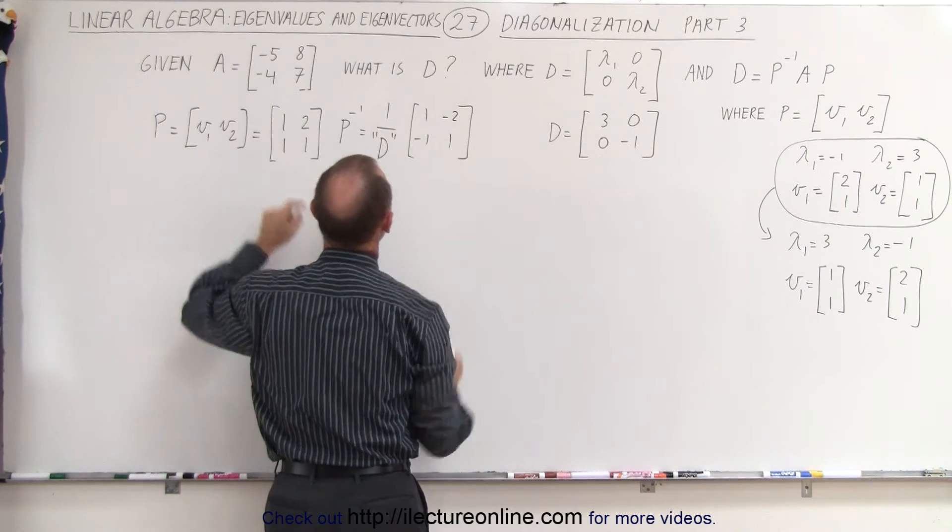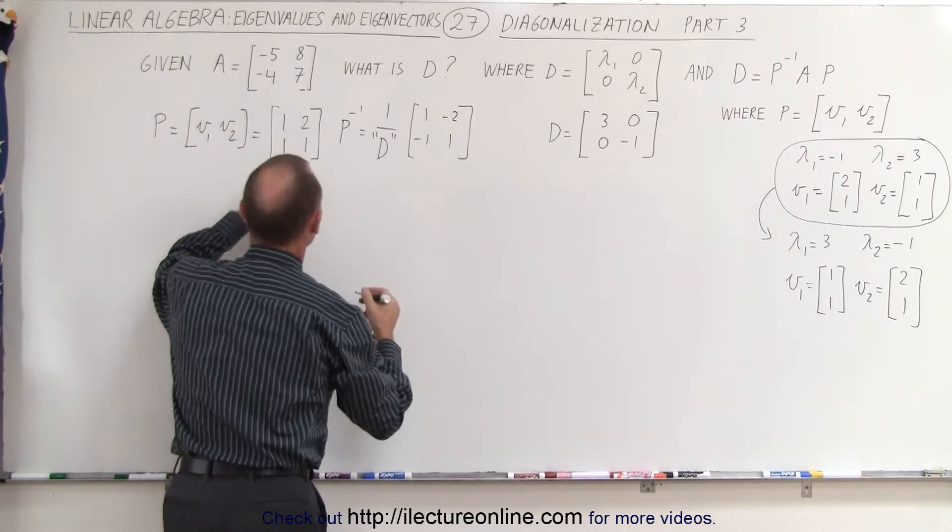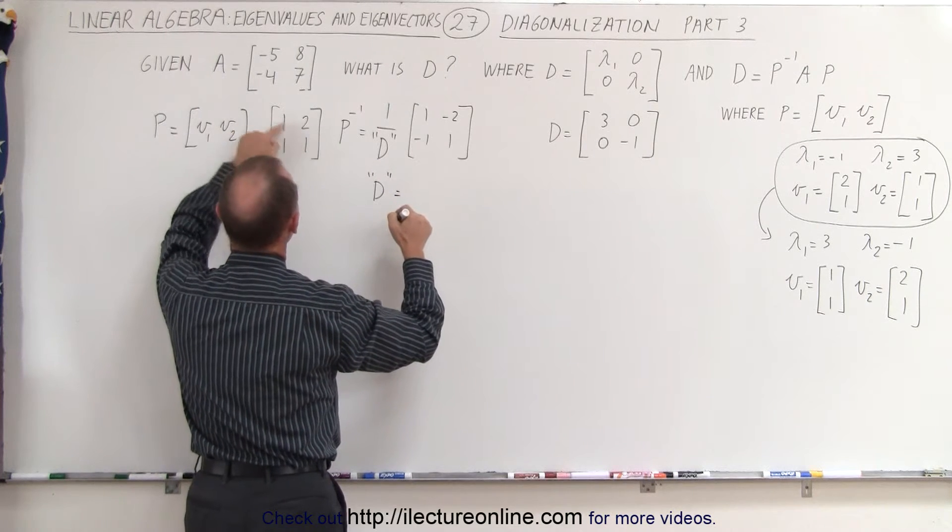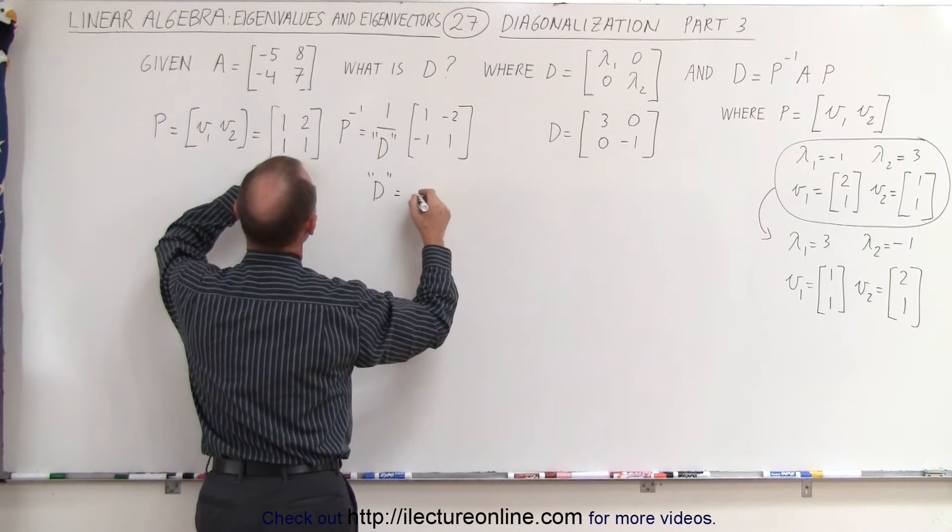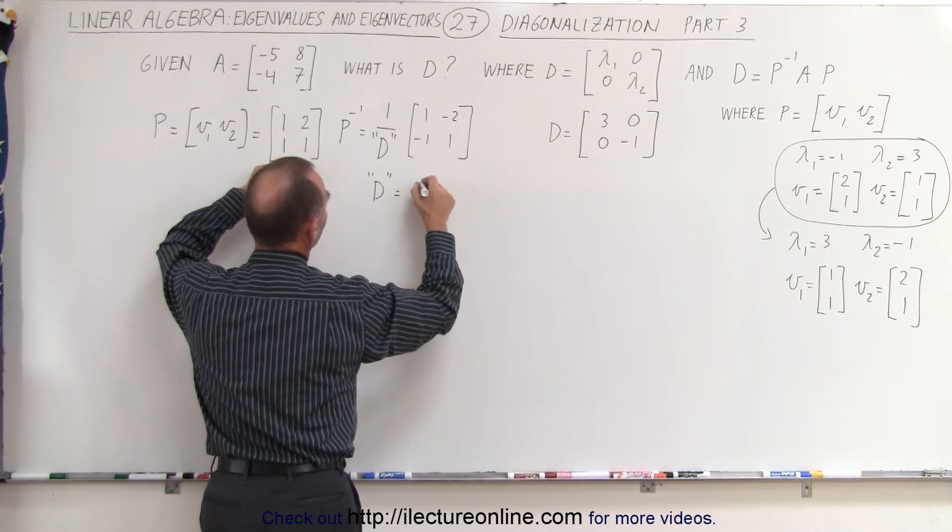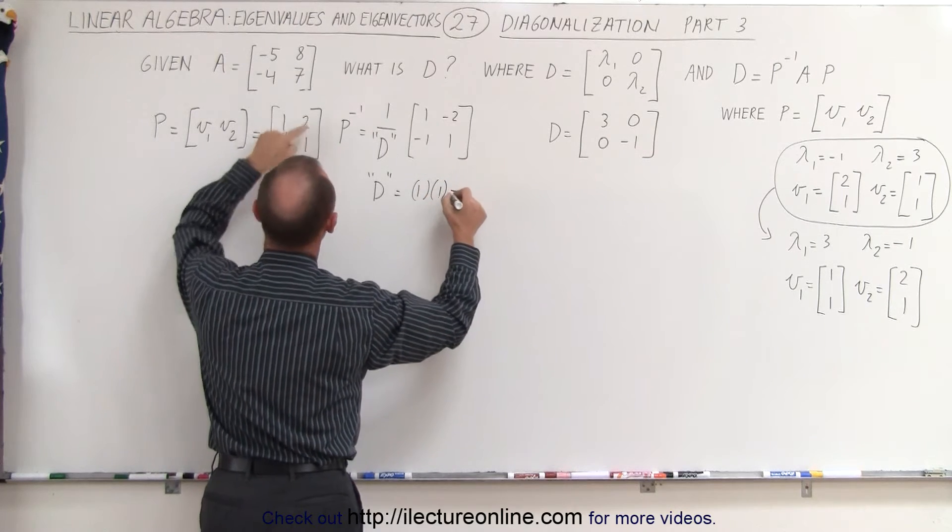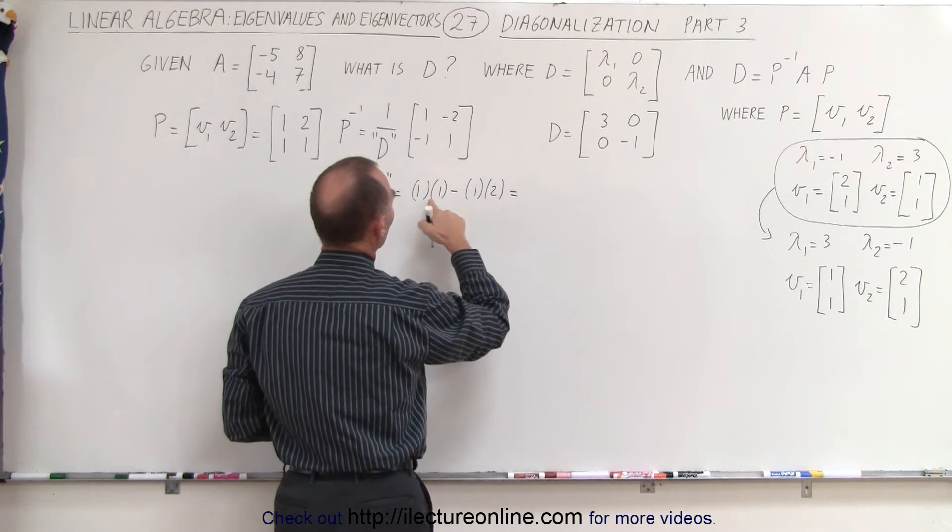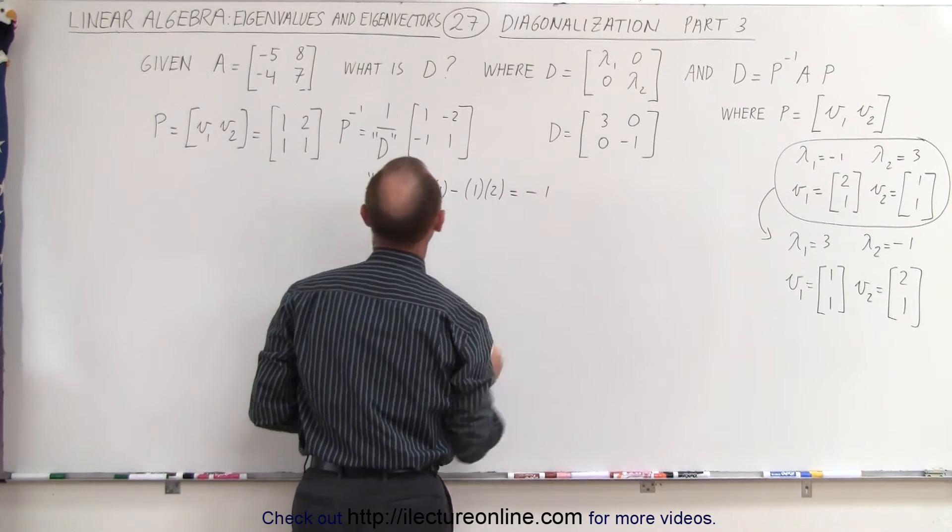Now the determinant of this, the D, like this, is equal to the product of those two, which is equal to 1 times 1, minus the product of those two, which is 1 times 2, which is equal to 1 minus 2, or minus 1.